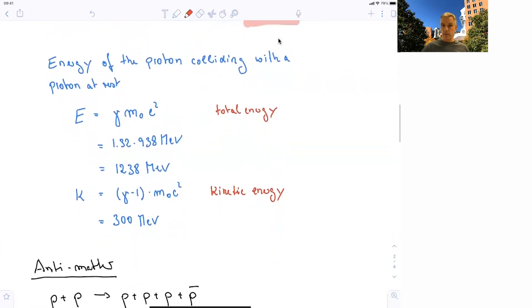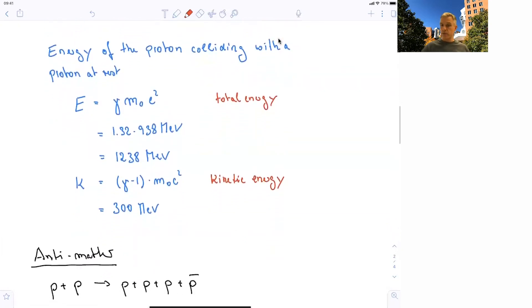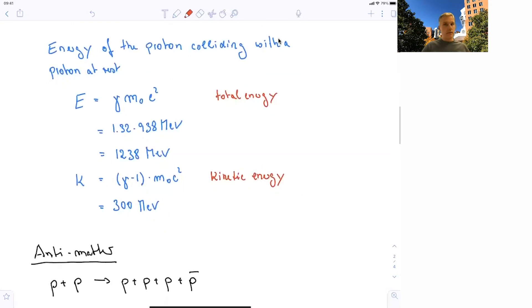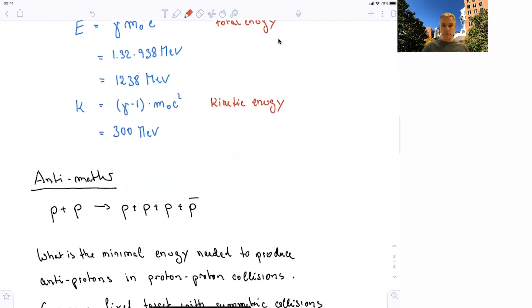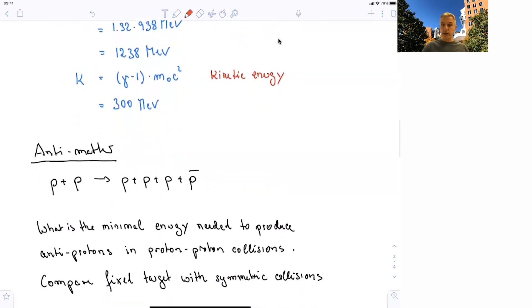All right, very similar problem now. But here, we want to produce antimatter. So we have a process of proton plus proton into three protons and an antiproton. Charge is conserved. In the initial state, the charge was 2. In the final state, the charge was 2 as well.